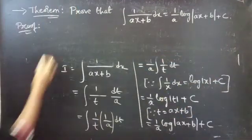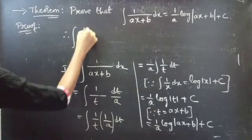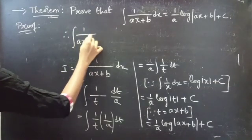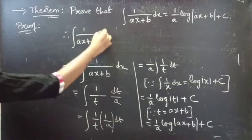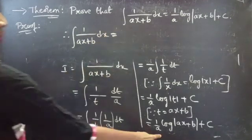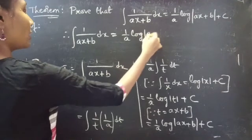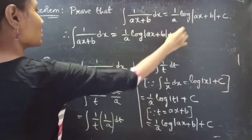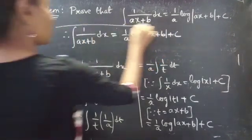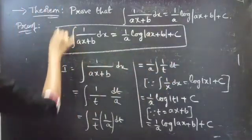So therefore integral 1 by ax plus b into dx equals to 1 by a into log mod ax plus b plus c. Hence proved.